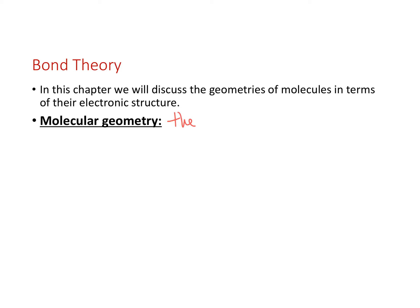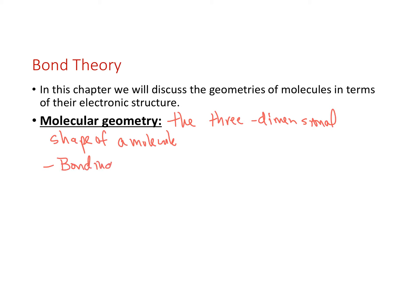The molecular geometry is the three-dimensional shape of a molecule. We're going to determine this based on our bonding and non-bonding electrons — how many bonds are around the central atom in question and how many lone pair electrons are also around that central atom.